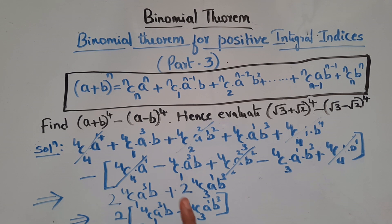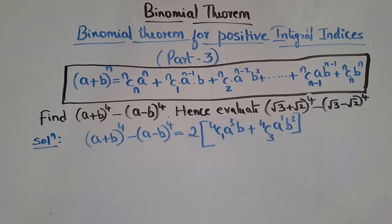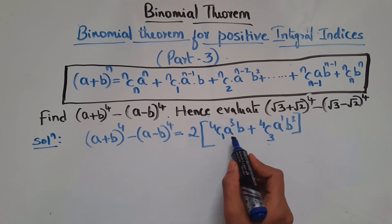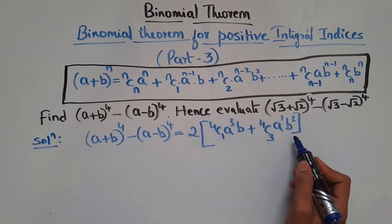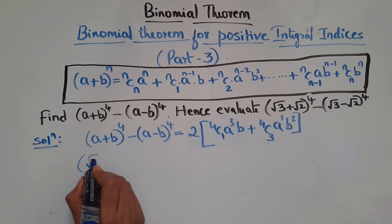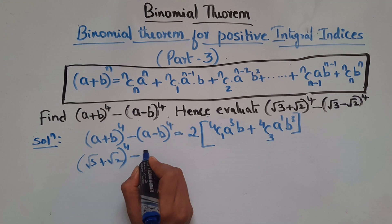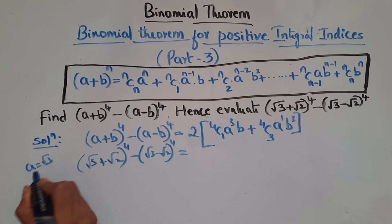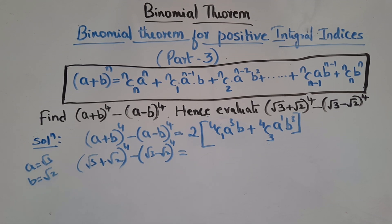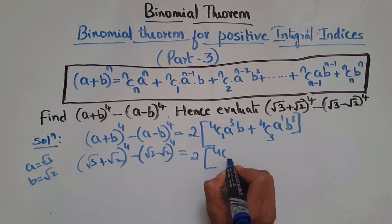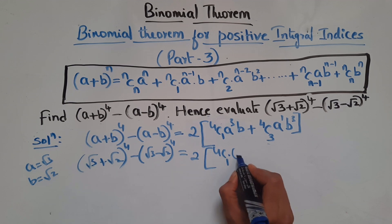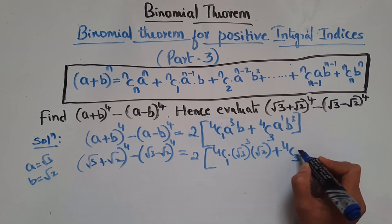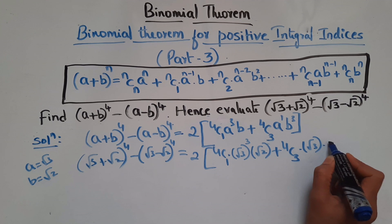Pause the video and note this down. We found (a+b)⁴ - (a-b)⁴ = 2[4C1·a³·b + 4C3·a·b³]. So now for (√3 + √2)⁴ - (√3 - √2)⁴, we substitute a = √3 and b = √2: 2[4C1·(√3)³·√2 + 4C3·√3·(√2)³].